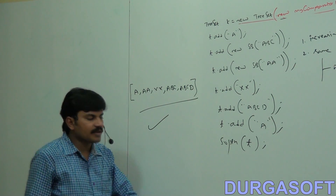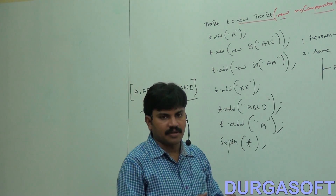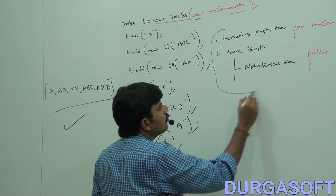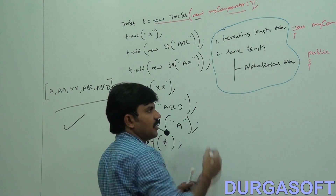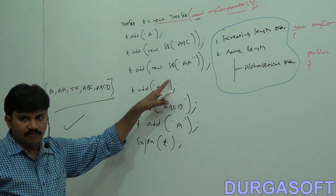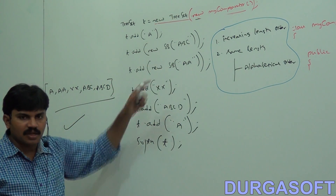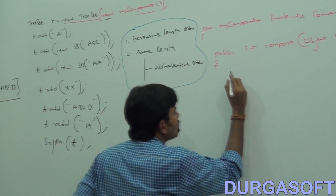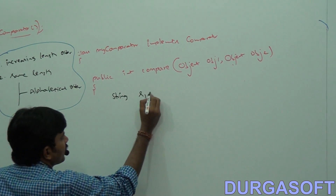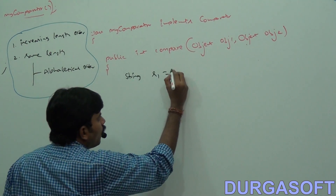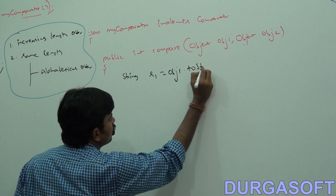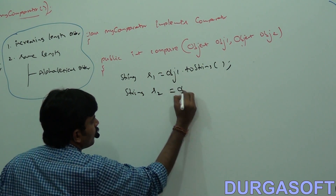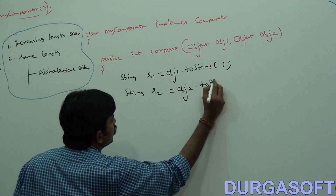How can we define the Comparator compare logic? Which objects are we inserting — String or StringBuffer? We don't know; it may be a String object or a StringBuffer. That's why let me convert these objects into String: String S1 = obj1.toString(), String S2 = obj2.toString().